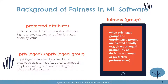So what exactly is fairness in machine learning? There are lots of fairness definitions in the literature, but they could be summarized as follows: fairness means when privileged groups and unprivileged groups are treated equally — for example, they have an equal probability of desired outcomes or predictive performances.